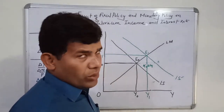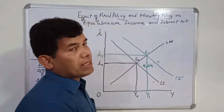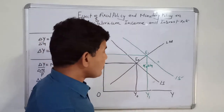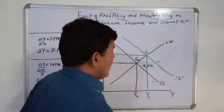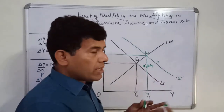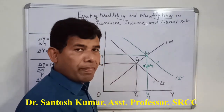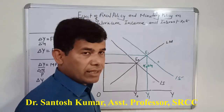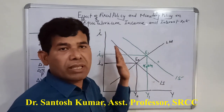Similarly, we can observe the effect of expansionary and contractionary monetary policy. Suppose government expenditure does not rise, and therefore IS curve remains the same. But we are assuming that money supply rises in the economy. So what will happen? This LM curve will shift rightward.